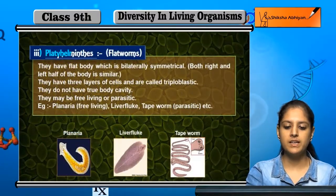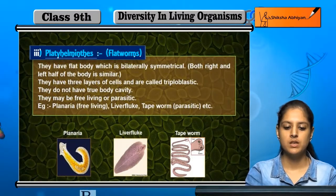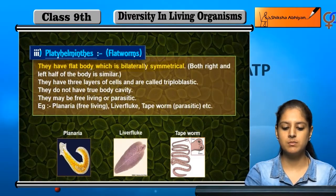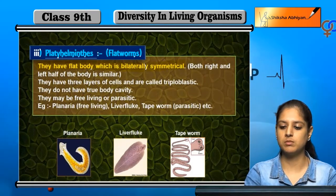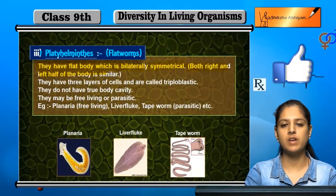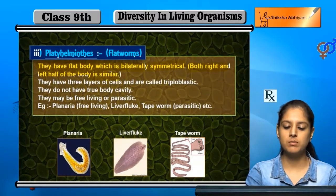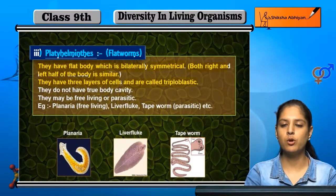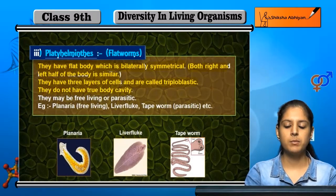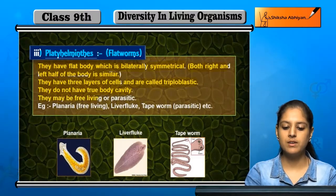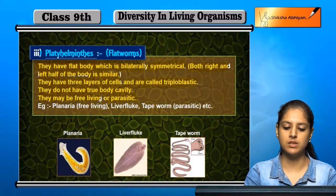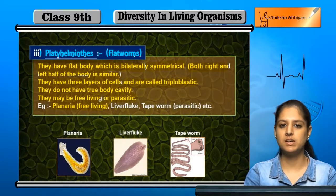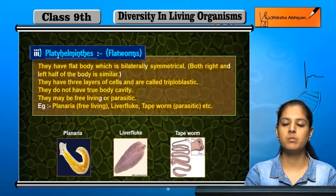Next is Platyhelminthes, or flatworms. They have a flat body which is bilaterally symmetrical. They have three layers of cells, so they are called triploblastic. There is no true body cavity. They can be free-living or parasitic. Examples include liver fluke and tapeworm, where tapeworm is parasitic.